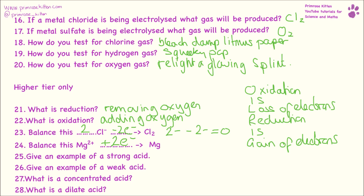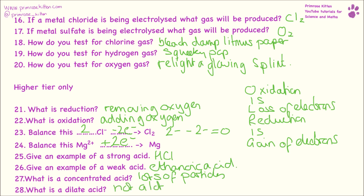An example of a strong acid would be hydrochloric acid or sulfuric acid; a weak acid would be ethanoic acid. Concentrated and dilute are different to strong and weak — concentrated just means that there are lots of acid particles, and a dilute acid means there are not a lot of acid particles.